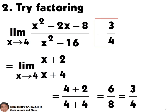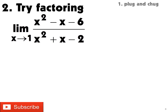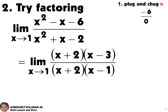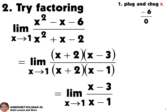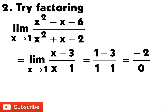Let's try another example. To solve for the limit of the function, we will try plug and chug first. We will substitute the 1 into the function and simplify. The result is negative 6 over 0. Now, if we factor the numerator and denominator, we will be able to cancel out the common factors. And then, if we do plug and chug again, we will get negative 2 over 0 — we can use DNE, or the limit does not exist.